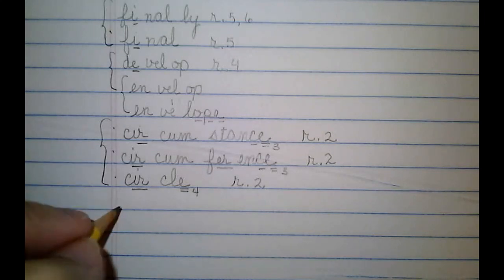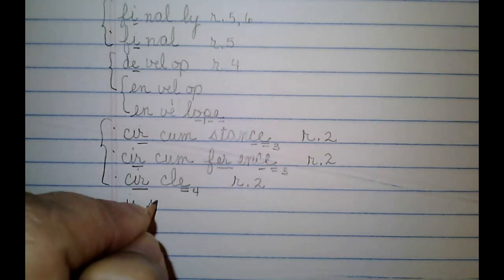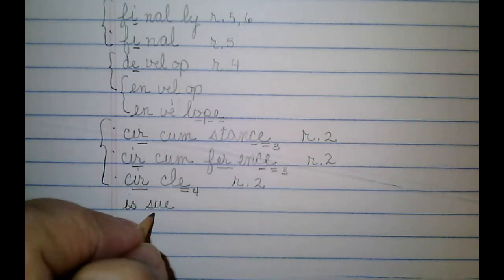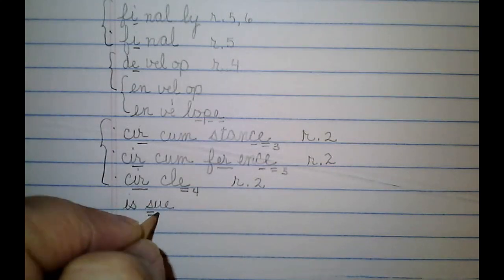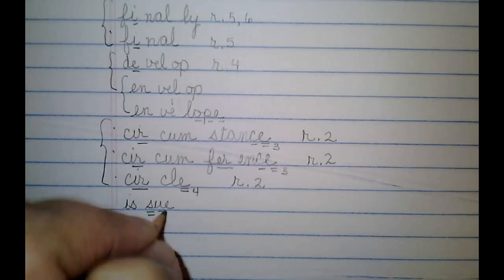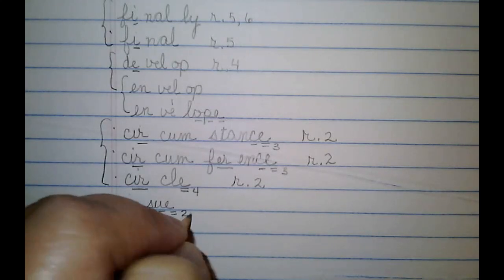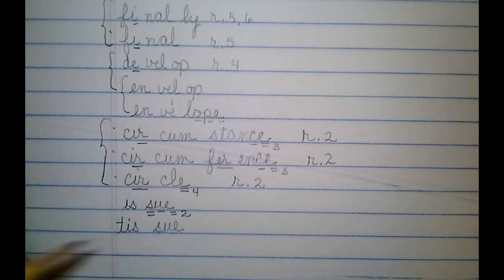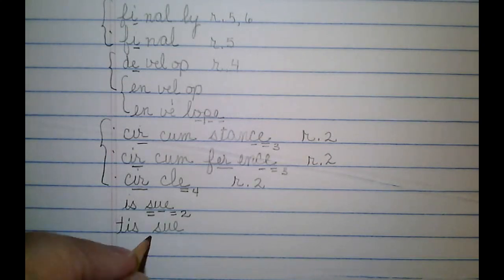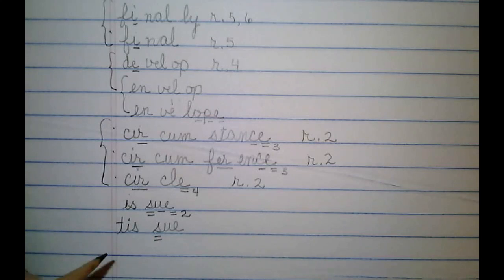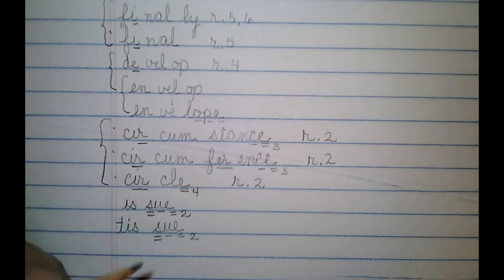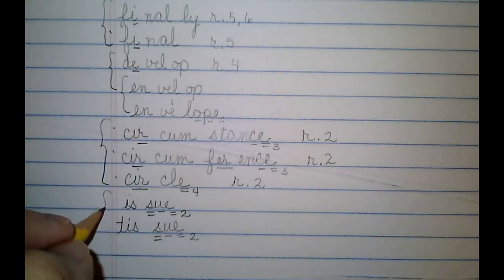My last two words are issue. That second S is not making its normal sound, so I'm going to double underline it. And then for my silent final E, I'm going to do U once, E twice, job two. The word that has a relationship with that is tissue. Again, I'm not using the normal sound for that second S, so I'm going to double underline it — U once, E twice, job two. And I will bracket those words.